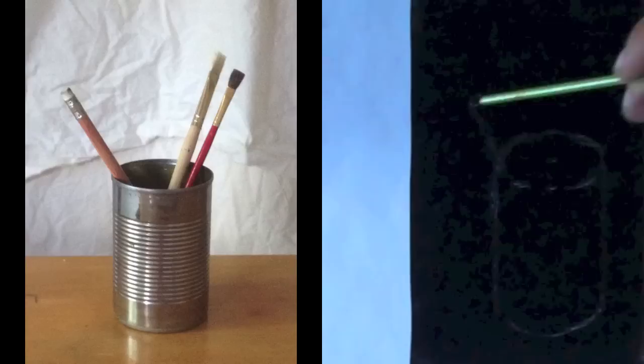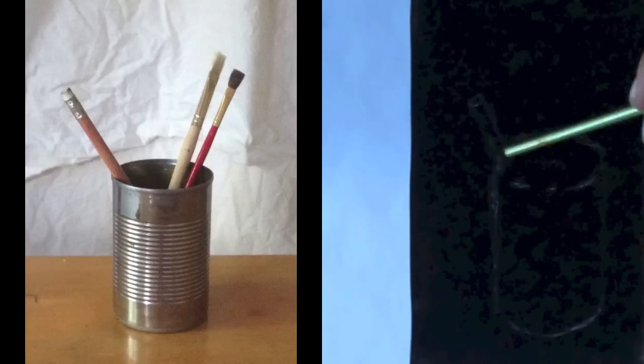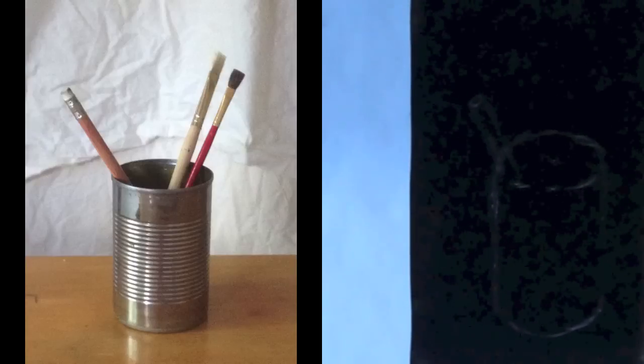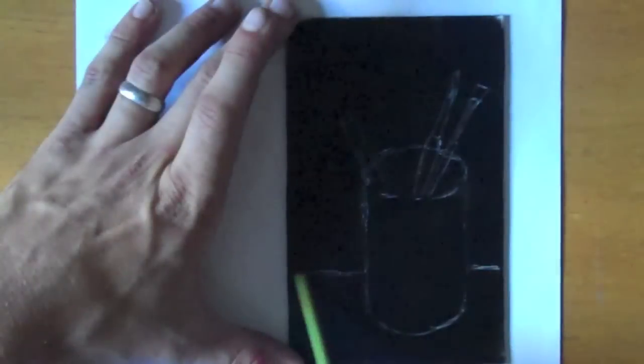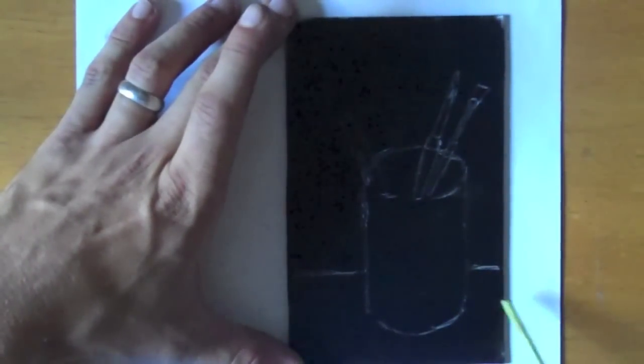Using the end of a paintbrush, I'll draw my subject matter into the ink. Put a white piece of paper underneath your plexiglass so that you'll be able to see your drawing.